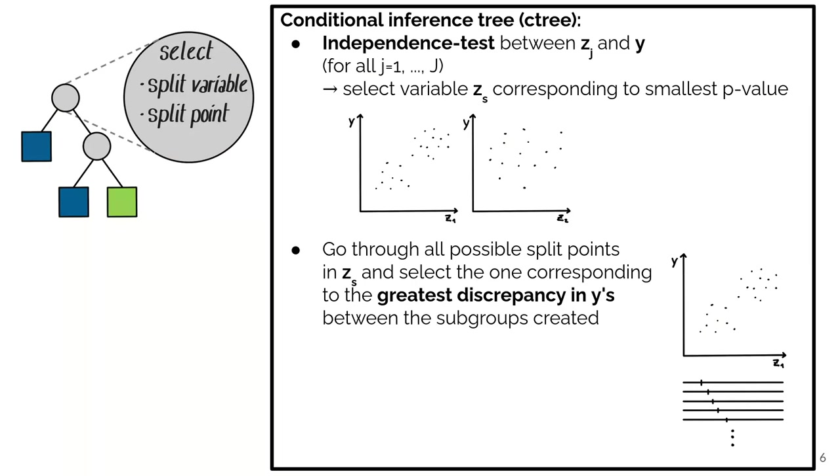To select the split variable we go through all the possible split variables. So again that may be in our example the amount of people, the amount of food, whether the people are cool, the host is nice, and so on.